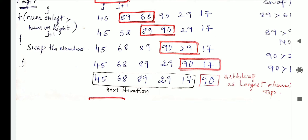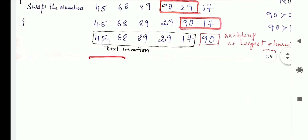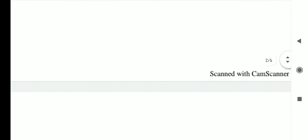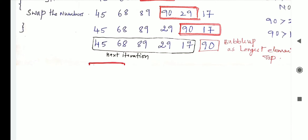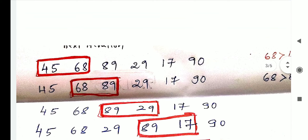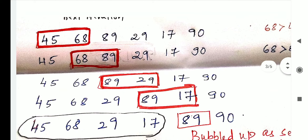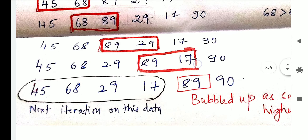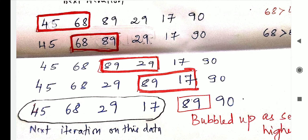This is the concept in bubble sort — the highest element bubbles up. Next, for the remaining elements we do the same in the next iteration, scanning from 45 to 17. Now compare 45 with 68: since 45 is lesser than 68, there is no need to interchange. Then 68 is compared with 89: since 68 is lesser than 89, they are kept as is. Then 89 is compared with 29: 89 is greater than 29, so swap. Again 89 is compared with 17: since 17 is lesser than 89, we swap.